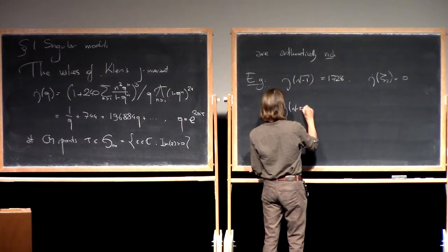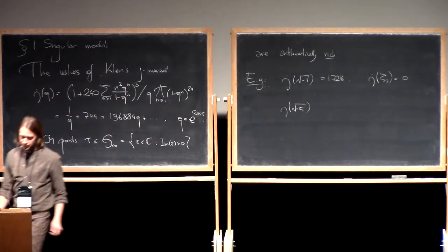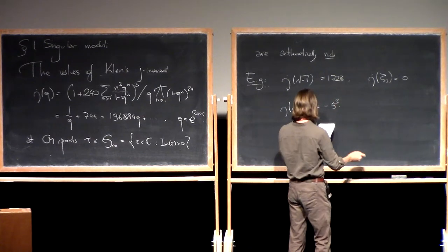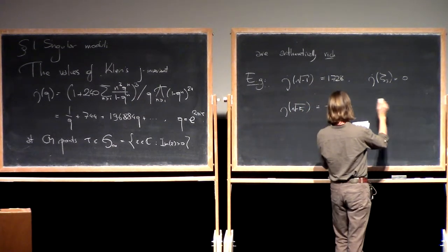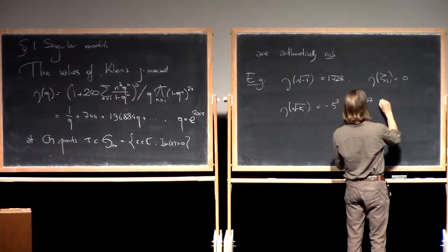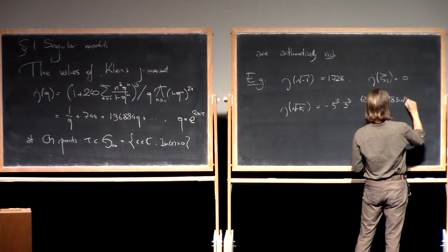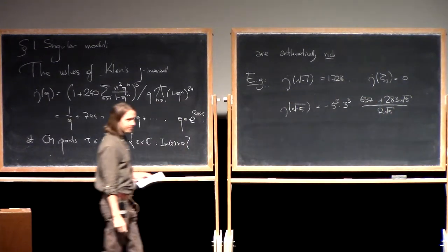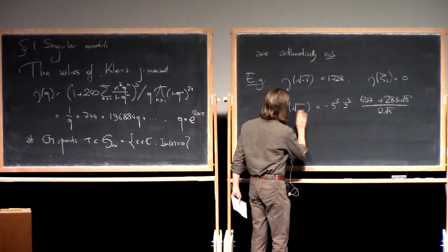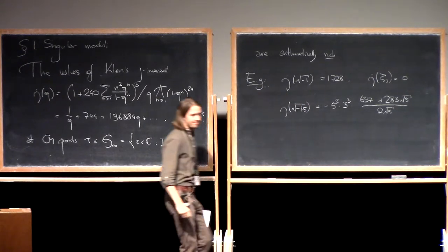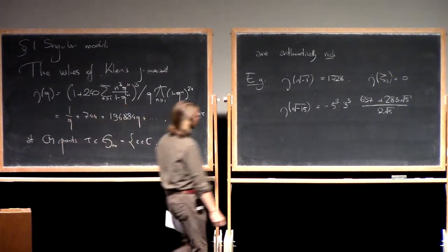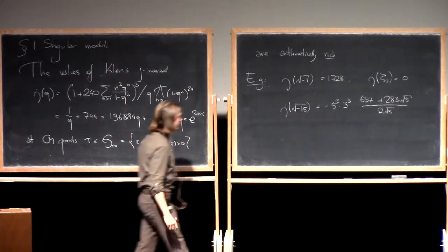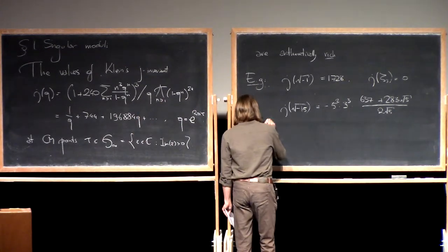So what about these values? I'll claim that they are arithmetically rich. Let me point out a number of ways in which they are arithmetically rich, perhaps guided by a few basic examples. The most standard ones are if you evaluate the j-function at i, you get 1728, as well as the j-invariant of a cube root of unity, which is 0. Perhaps a slightly more interesting example is j(√-15).